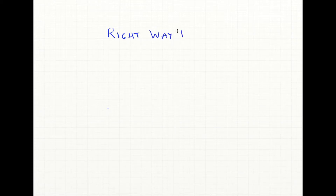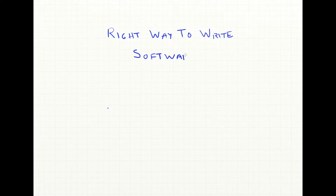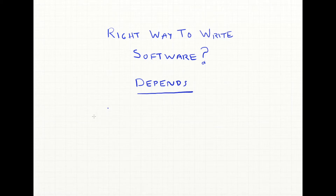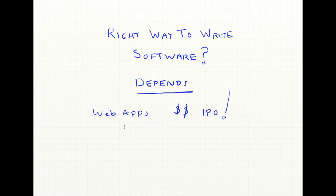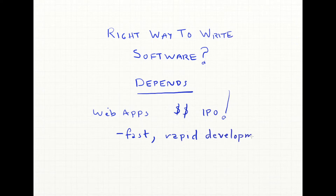All this leads to the question: what's the right way to write software? Is the NASA way the way to go, since we can really guarantee one error? Is the IBM OS/2 method the correct way? The best we can say is it really depends. The shuttle software has to be the way it is because it's life critical. If we're developing software for medical devices, equally critical. But if we're trying to develop web apps, we don't want to write in the NASA slow way with all the specs. Our goal is to make big bucks, get to IPO. We can't wait around while other companies are developing fast and getting market share. We want rapid development and we can put up with bugs.